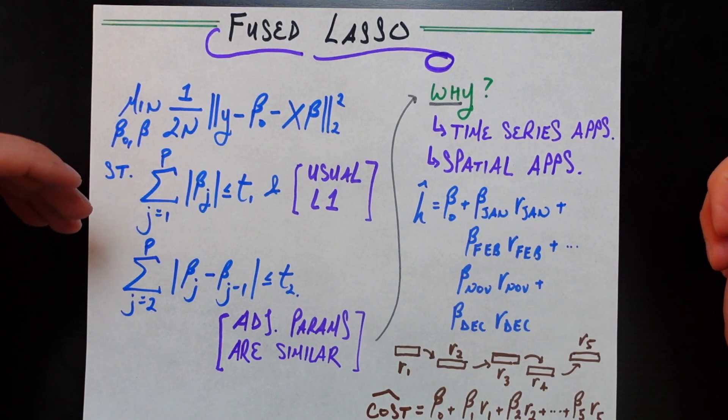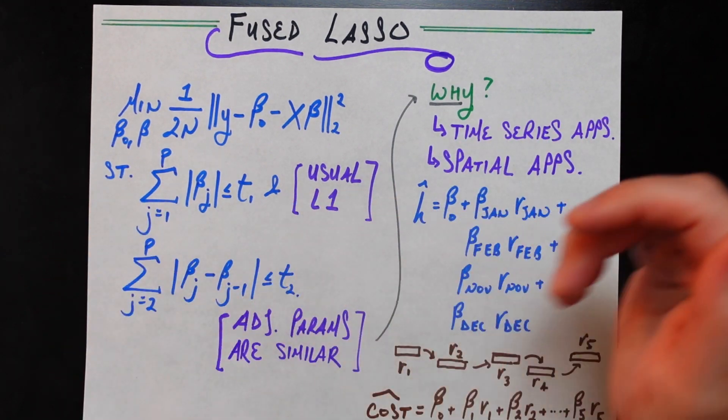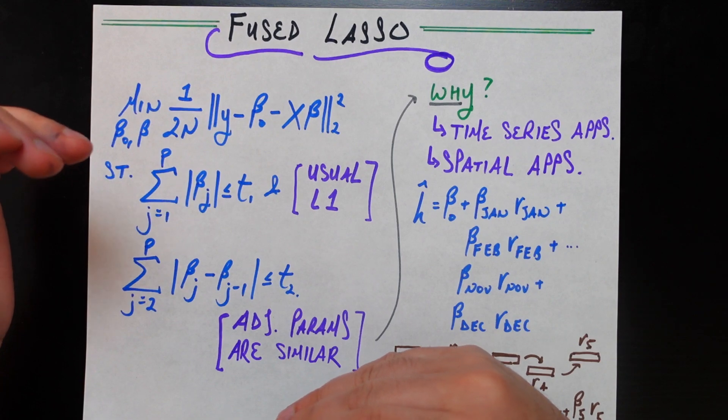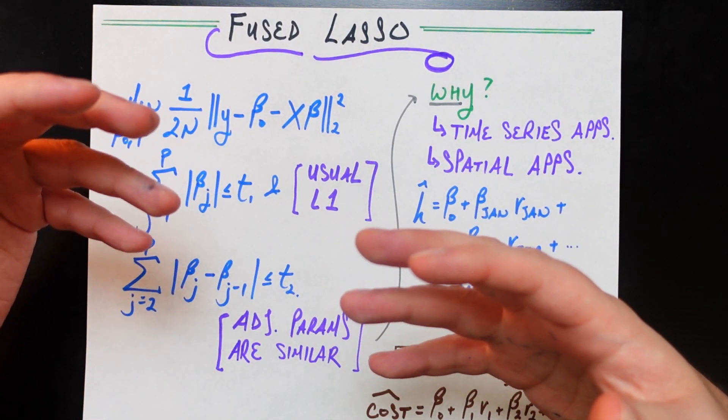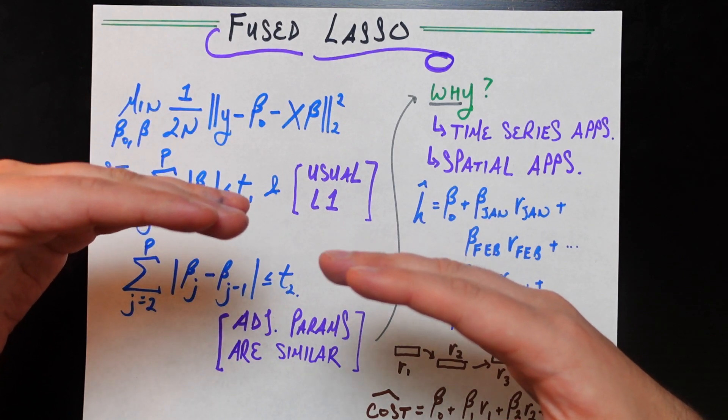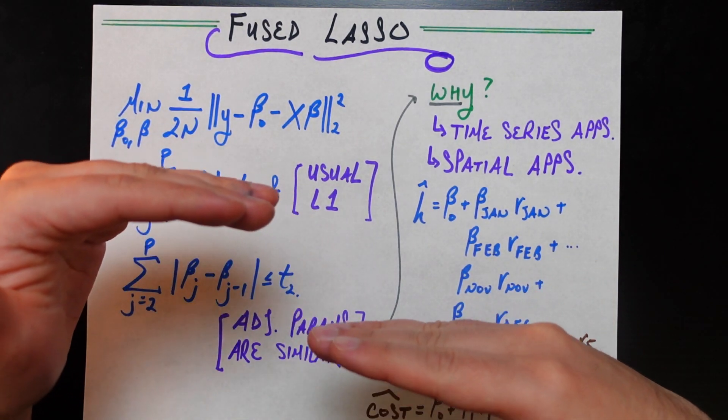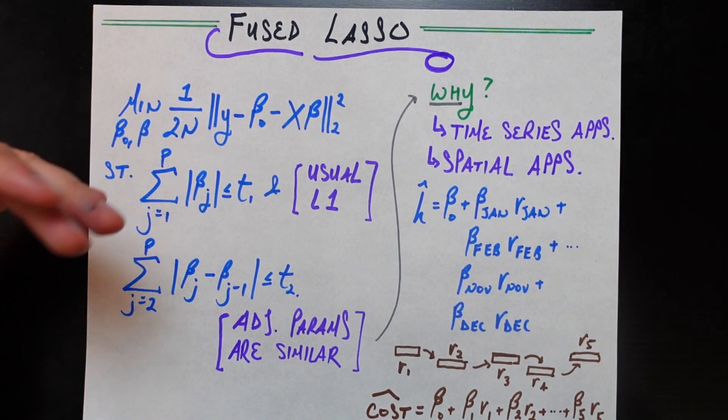Just as in the normal penalty, we were trying to make sure that the individual betas were controlled in some way. Here, we are trying to make sure that the difference between adjacent betas is not too big. We want the solution to be such that beta 1 and beta 2, whatever they are, are kind of close to each other. We're not going to be very happy if they're too far away from each other. Similarly, beta 2 and beta 3 better be kind of close to each other. We're not going to be happy if they're too far from each other. We're going to penalize that.